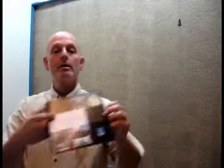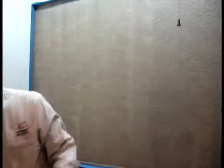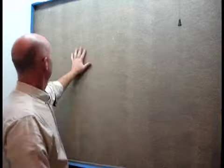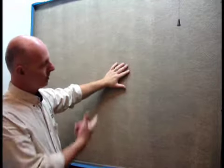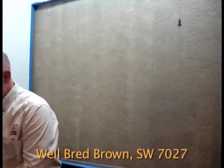Again we're doing Foal Impressions Quartzstone Smooth Finish. So I've already got the wall prepared with the Quartzstone Base Coat. It's a tinted aggregate primer, and in this case I've taped everything off, prepped the wall, and primed it with the Quartzstone Base Coat. It's tinted to well-bred brown.